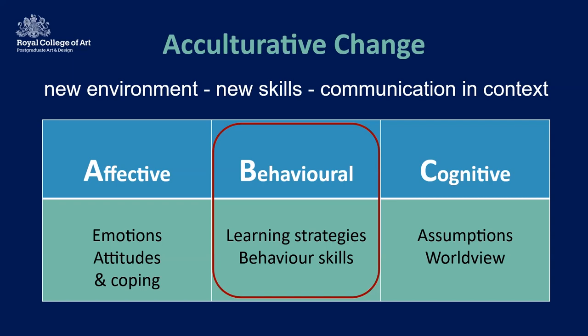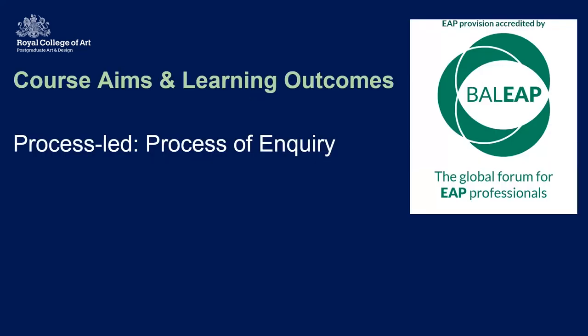The acculturative process of change is about how all of these elements are involved in the process of change: how students process and change in the new environment, what skills they need, and how they communicate. We look at behavioural changes, different learning strategies, different behavioural skills, and different ways of communicating. Berry writes about it a lot in cross-cultural communication. And it's a two-way process to be ideally effective — so it's not just students changing, but the institution should change as well. But that's for another day.